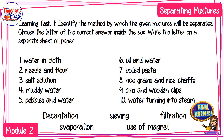The choices can be found below. Number 1: water in cloth. Number 2: needle and flour. Number 3: salt solution. Number 4: muddy water. Number 5: pebbles and water. Number 6: oil and water. Number 7: boiled pasta. Number 8: rice grains and rice husks. Number 9: pins and wooden clips. Number 10: water turning into steam.